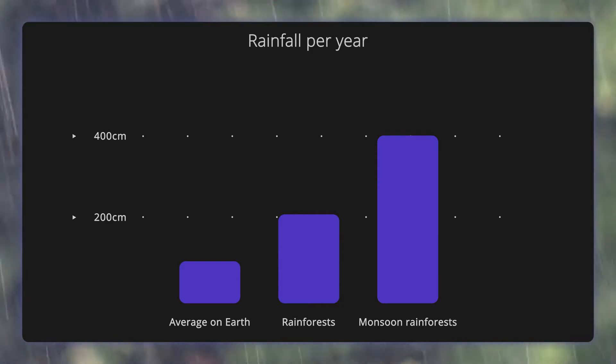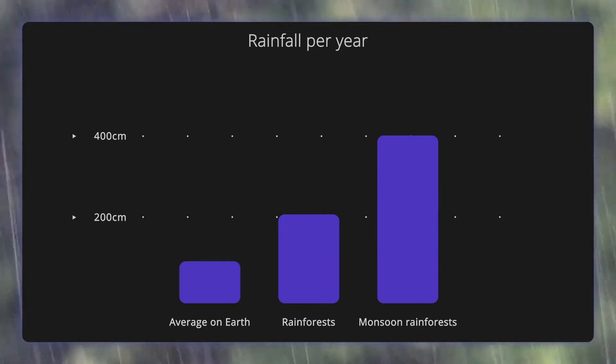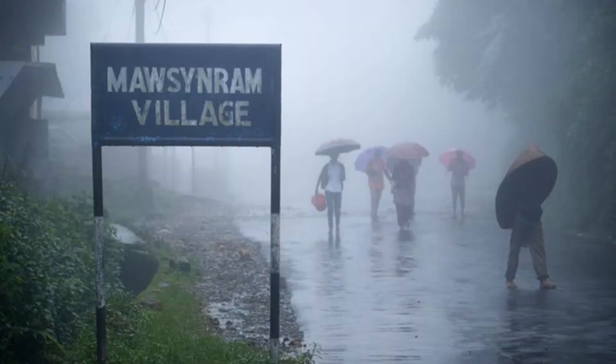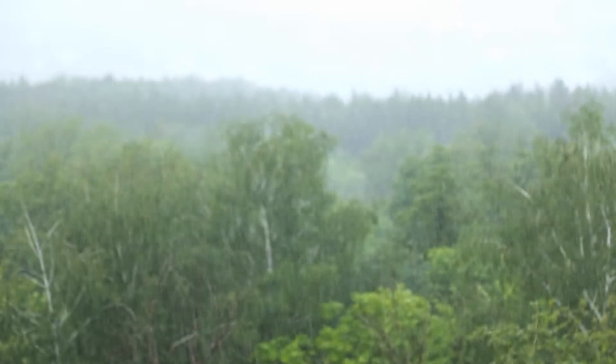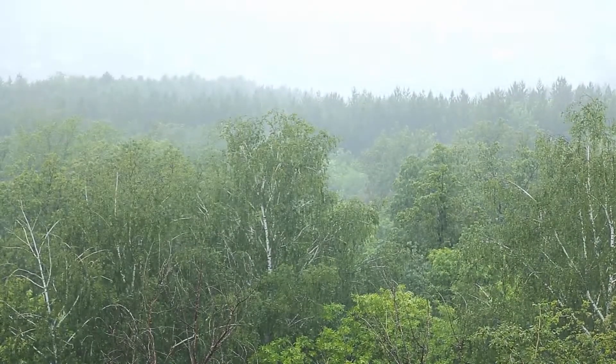Monsoon rainforests receive even more rainfall, often averaging up to 400 centimetres. The wettest place on Earth is Mawsynram in India, averaging 1,187 centimetres of rainfall per year. Let's explore why it rains there so much.